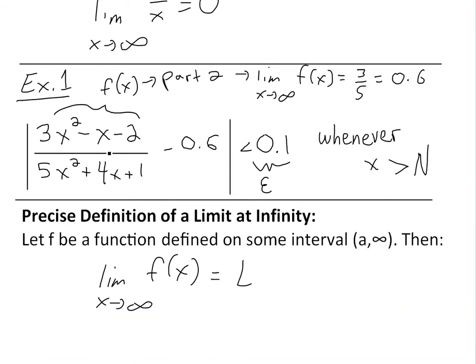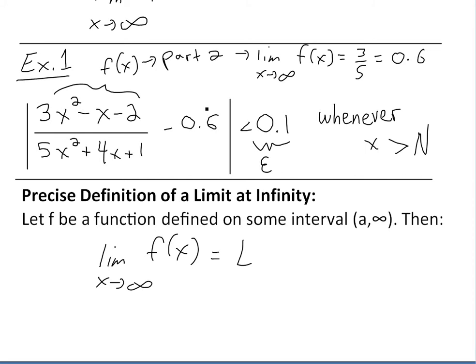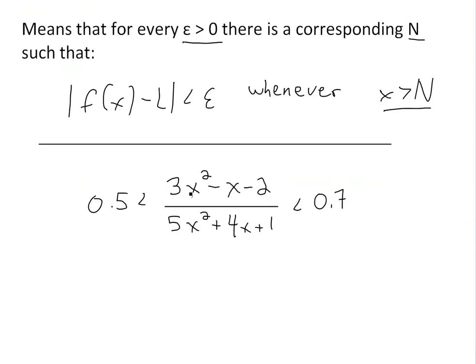Because if you had something like 0.8, then 0.8 - 0.6 = 0.2, and that's greater. And if you had something less than 0.5, let's say 0.4 - 0.6 = -0.2, and the absolute value is greater than 0.1. So it has to be in between, so we just put 0.7 and 0.5, because when you subtract it, that's going to be 0.1, but it has to be less than this.